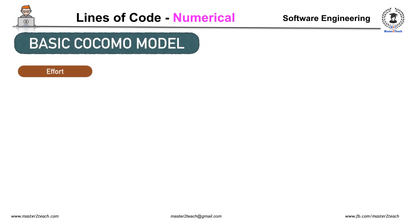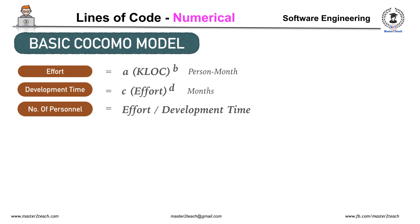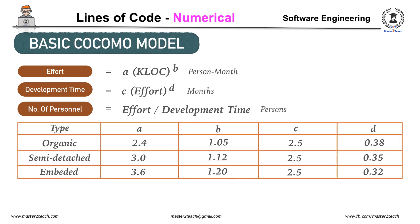Moving forward to calculation, the basic COCOMO model equations are: Effort = a × KLOC^b (in person-months), Development Time = c × Effort^d (in months), and Number of Personnel = Effort ÷ Development Time (in persons). The constant values for semi-detached mode are: a = 3, b = 1.12, c = 2.5, and d = 0.35.